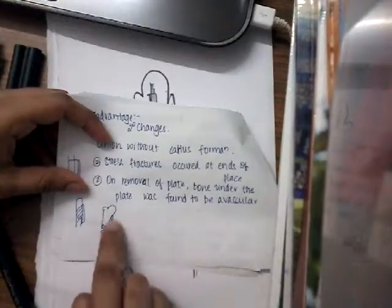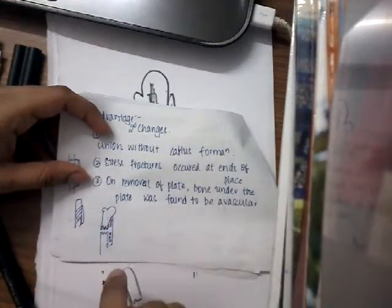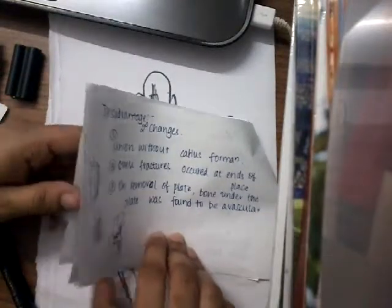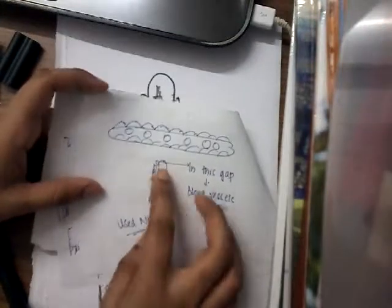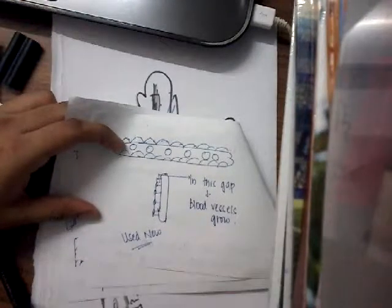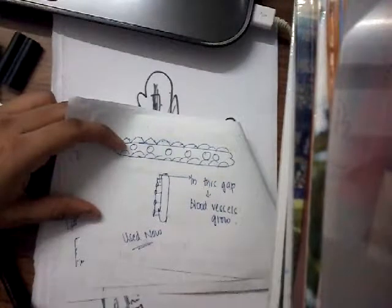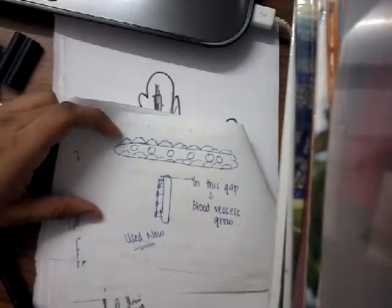The main disadvantage of the normal dynamic compression plate — which I explained in my last lecture — is that on either side of the plate, once you remove the plate, the bone which is present under it is found to be avascular. But here in limited contact dynamic compression plate, in the gap between the concave grooves and the bone, blood vessels grow, and as a result, there is no avascularity. The disadvantage of avascularity is completely abolished.